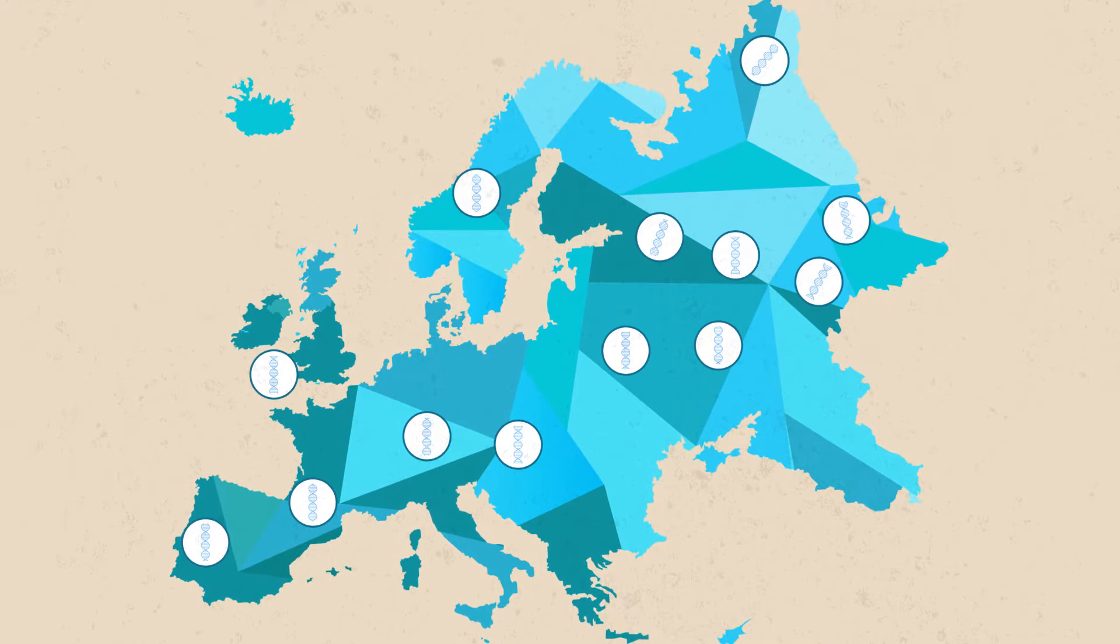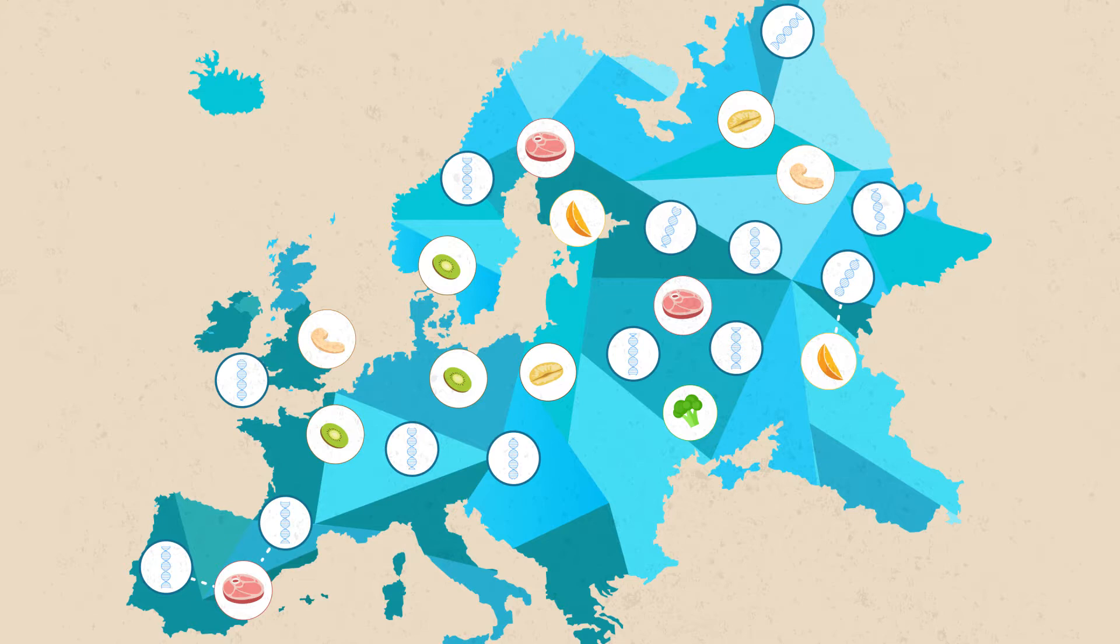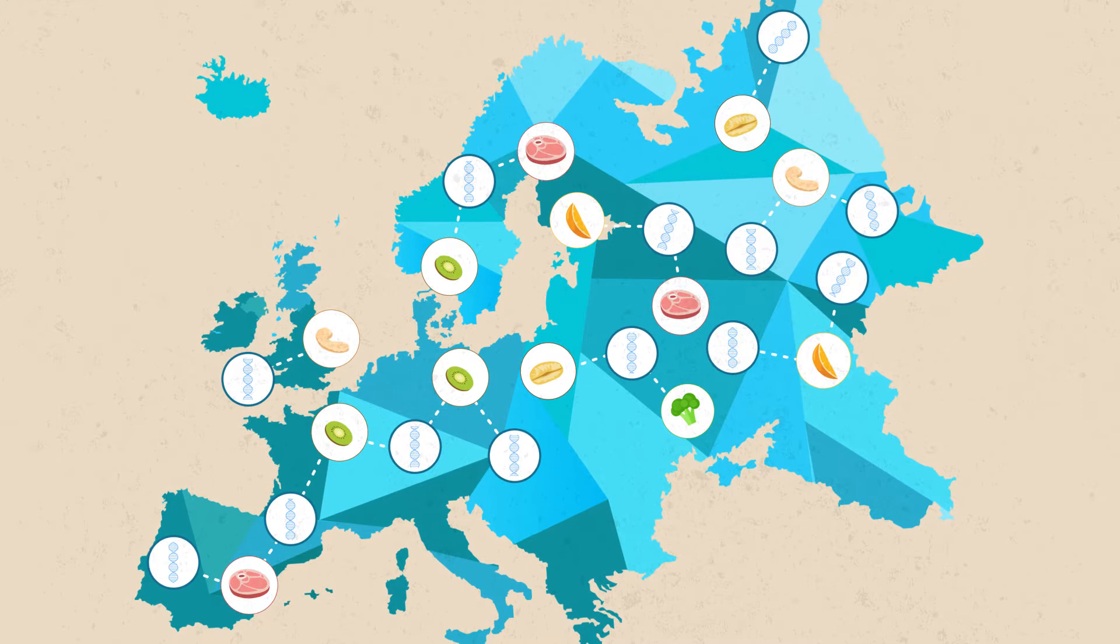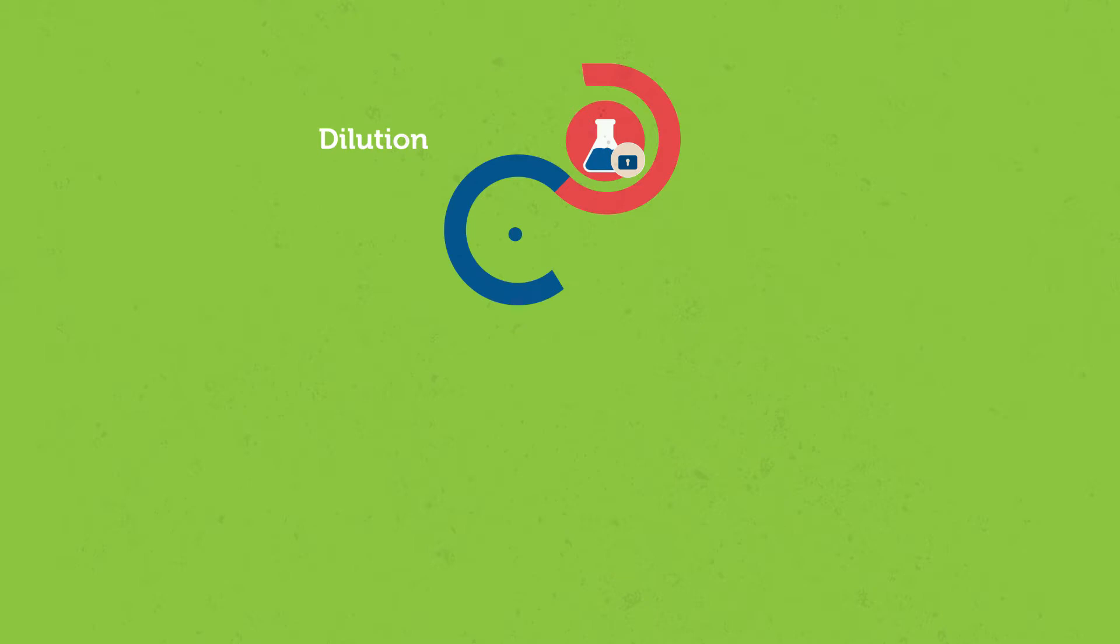Several European commercial sequencing companies specializing in food testing are currently offering NGS services to the global food supply chain, with the intention of ensuring that incoming raw ingredients are the desired, unadulterated product, therefore helping to combat food fraud.